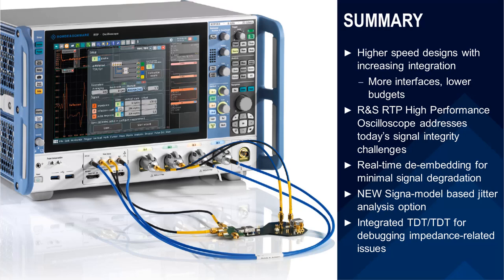I hope this video was useful. I highlighted two different types of equipment — real-time oscilloscope and VNA — for making TDR measurements. The examples used the Rohde & Schwarz RTP high-bandwidth oscilloscope with its built-in TDR capabilities after calibrating. We could perform fault location, measure propagation delay, and look at the impedance profile of a DDR memory system. There are a lot of other tools built into this instrument — jitter, de-embedding — all coming together to make this a very nice debugging instrument. Thank you.